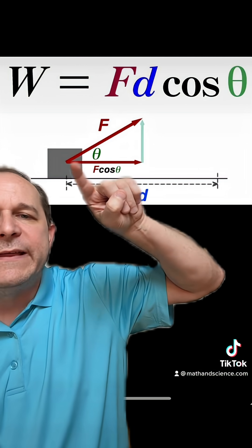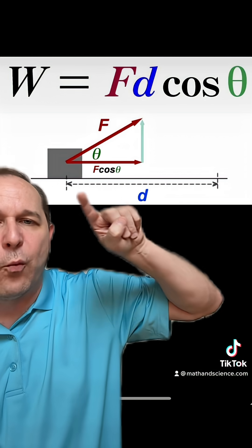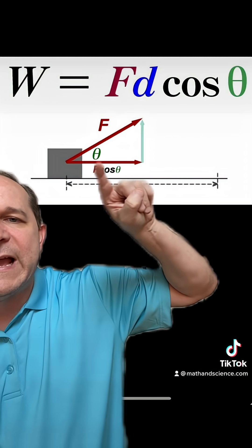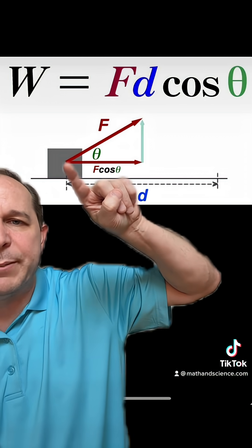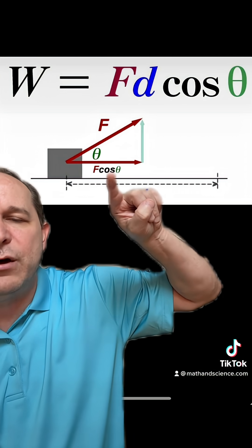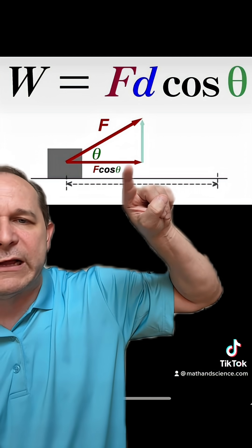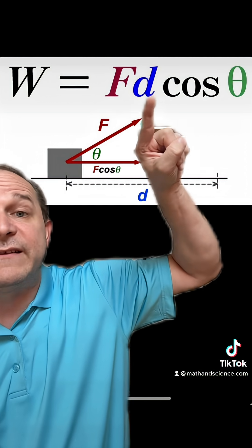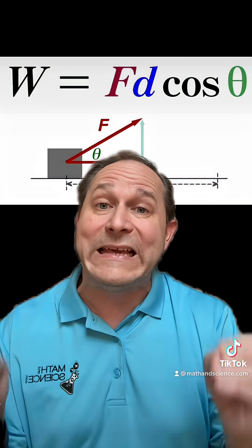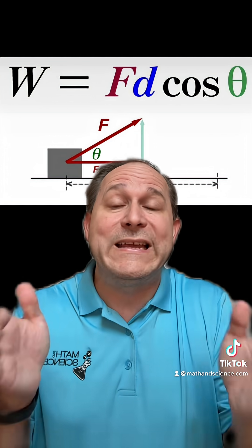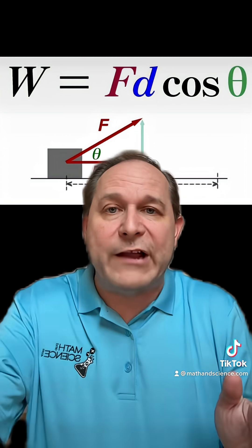If the force is applied at some angle, like if this were a rope pulling this block at some angle, the only force that counts in terms of work as it moves through a distance d is this component of the force, the component pushing horizontally. So F times the cosine of theta gives us that parallel force, F cosine theta, and then times the distance. So work is force times distance, but only the amount of force that's in the direction of motion.